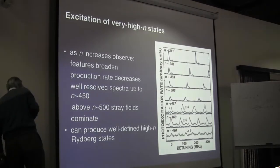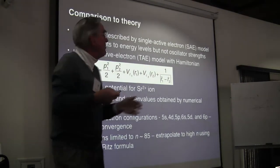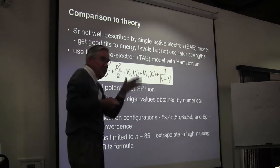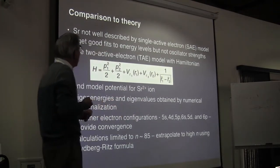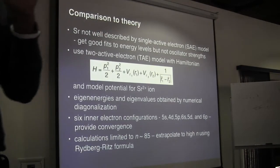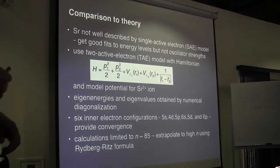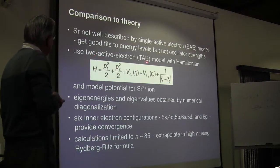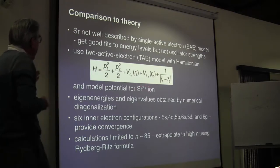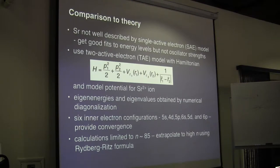We can produce well-defined high-n Rydberg states. Now, strontium is not well described by a single active electron model. You can get good fits to the energy levels using a pseudo-potential, but while you can fit energy levels, the oscillator strengths for excitation of S and D levels are way off — the calculation predicts S should be stronger than D, whereas experiment shows exactly the opposite. Our theoretical collaborators have used a two-active-electron model with a Hamiltonian similar to that discussed by Tom Gallagher: two kinetic energy terms, the interaction of the two electrons among themselves, and single-electron terms using the potential for the strontium 2+ ion.